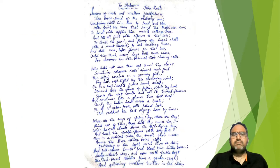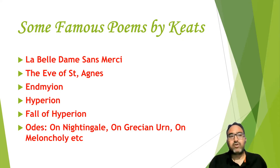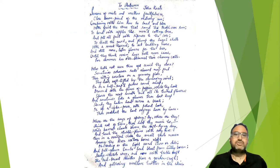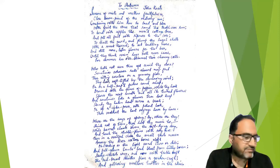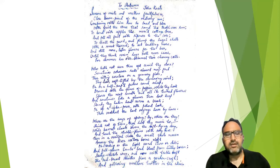So this is something about what an Ode is, the forms of Ode, its definition, the famous poets who have written Odes, a short biography of John Keats, and the names of some famous poems written by him. Now we will move on to the actual text of the poem. You can see the text in front of you — I have written it on paper because I love writing poetry. This is the text of 'Ode to Autumn' by John Keats.